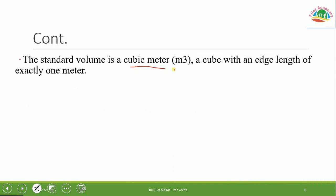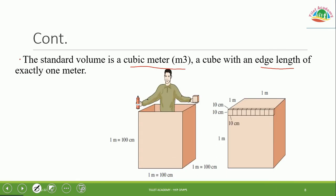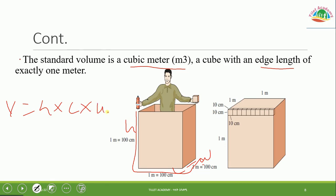The standard unit of volume is the cubic meter — a cube with an edge length of exactly one meter. Volume is calculated as height × length × width, giving meter × meter × meter = cubic meter (m³). A smaller unit, the cubic centimeter (cm³), is also commonly used.